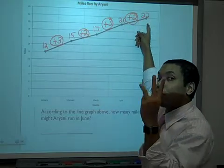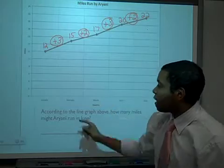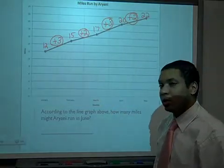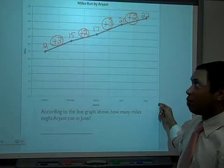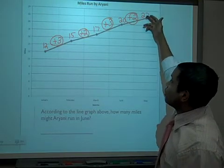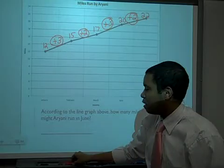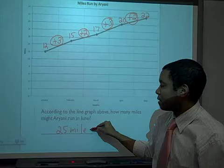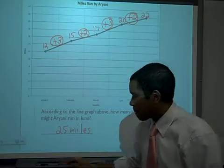So according to the line graph above, how many miles might Ariane run in June? Well, June is the next month after May, so I'm going to add three more to twenty-two, which would give me twenty-five, and give me meaning twenty-five miles. Next, let's actually not look for patterns, and let's try and see if we can find a range, find a number within the range.